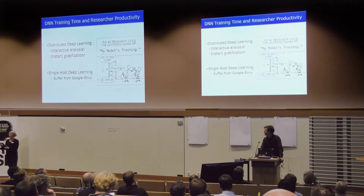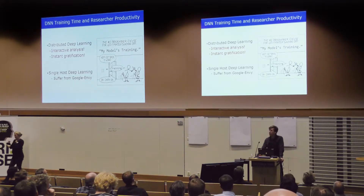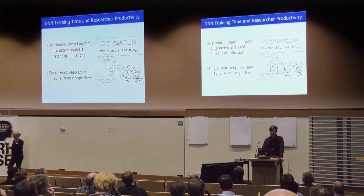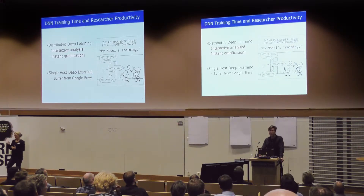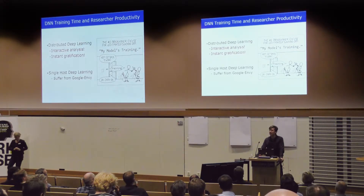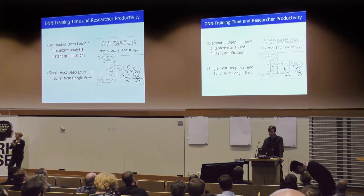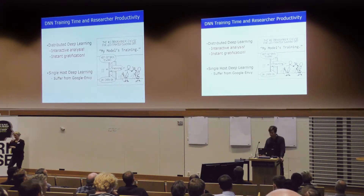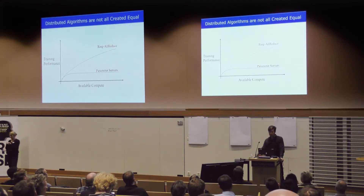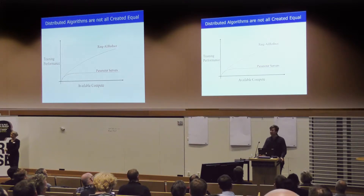Based on a Google slide by Jeff Dean: if you want happy machine learning practitioners, give them distributed deep learning — they'll be able to do interactive analytics and get instant gratification from training. If you're buying a GPU server with eight GPUs for one and a half million crowns, you're still far from the state-of-the-art and will be waiting a long time for your model to train.